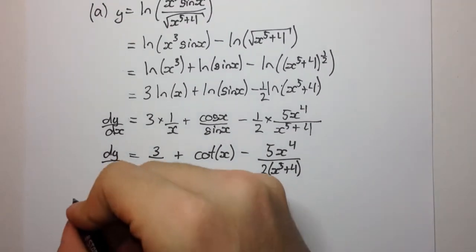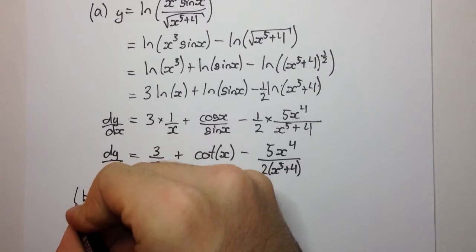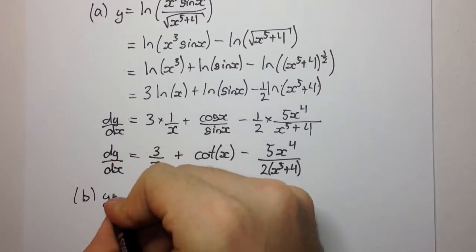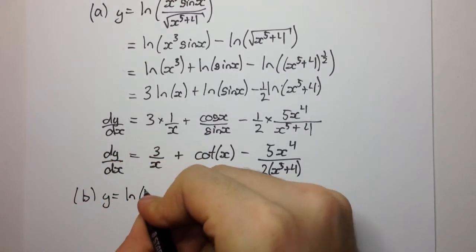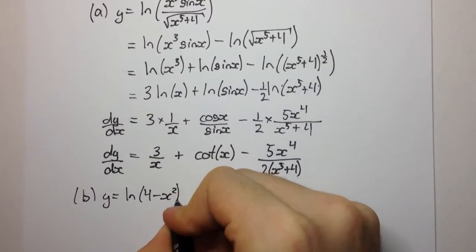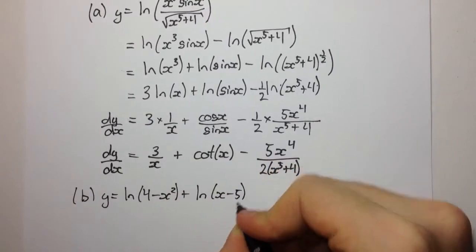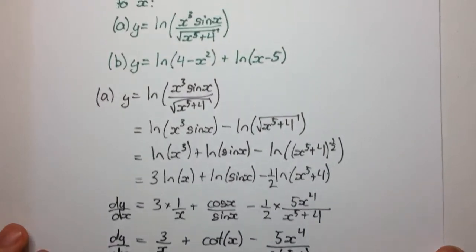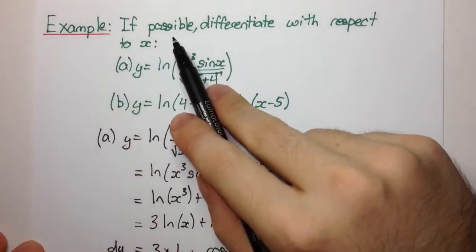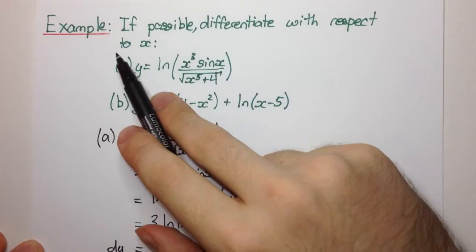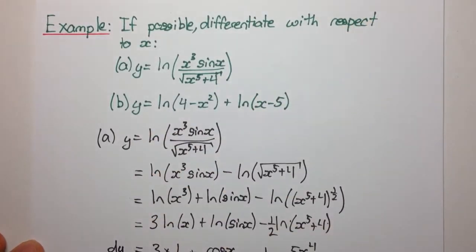Okay, let's have a look at part b. y equals ln of 4 minus x squared plus ln of x minus 5. Now, let's go back and read the question carefully. If possible, differentiate with respect to x, and then it gives you these two functions.